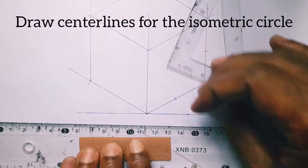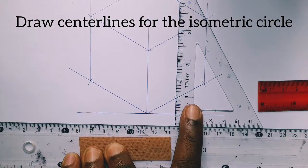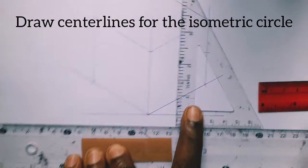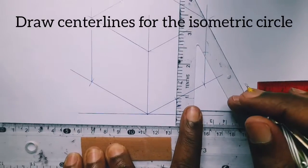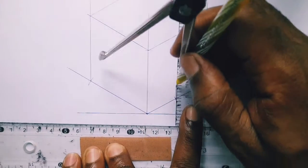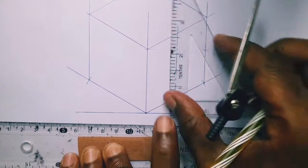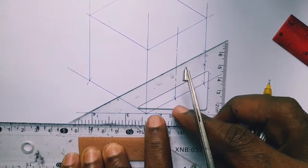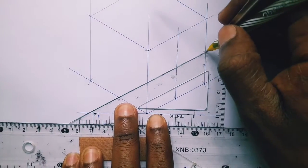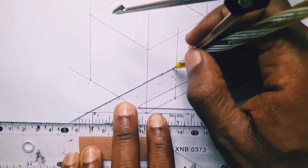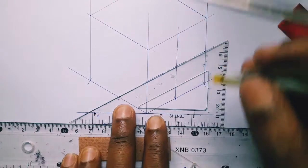So we have the vertical center line here. We draw it with a vertical edge. Then we also have to draw the horizontal center line. And now once the two center lines meet they give us the center point.